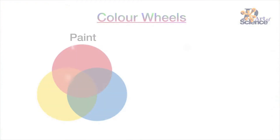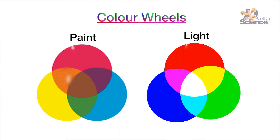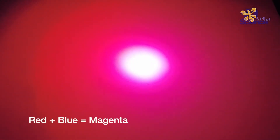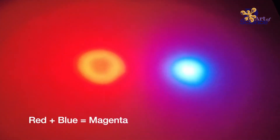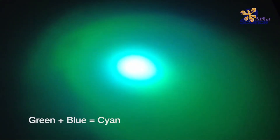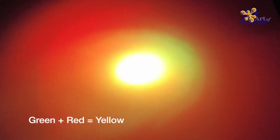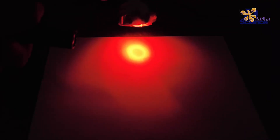Just like the secondary colors in paint, light also has secondary colors. If we merge the red and blue light, we get the secondary color magenta. On merging the blue and green lights, we get cyan, and on merging the green and red lights, we get the color yellow. These are the secondary colors of light.